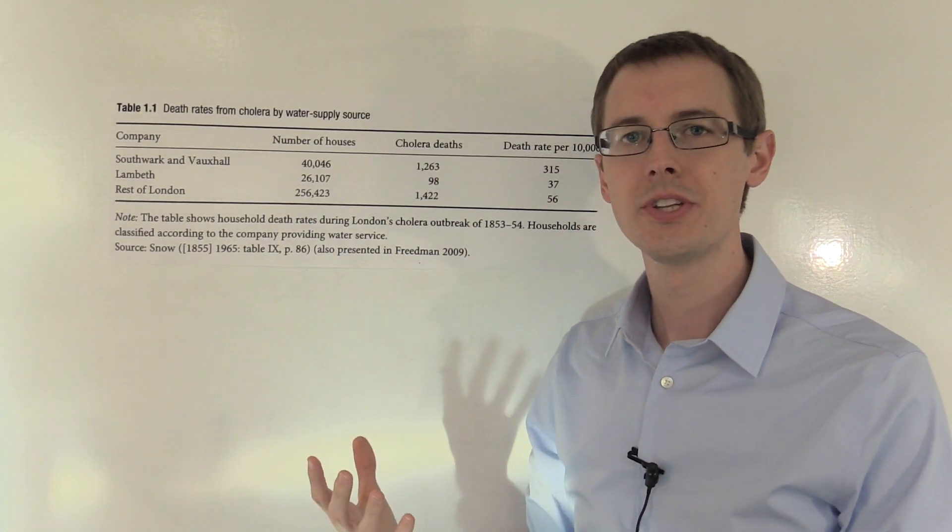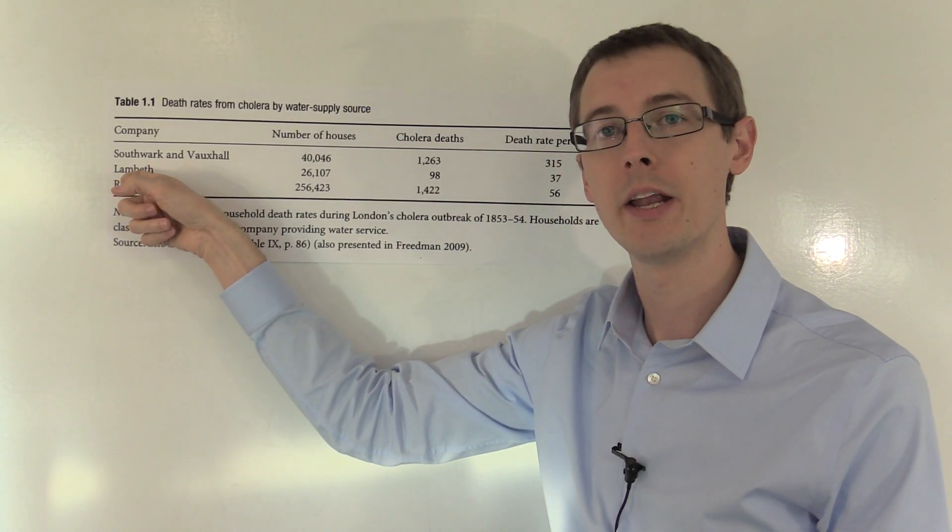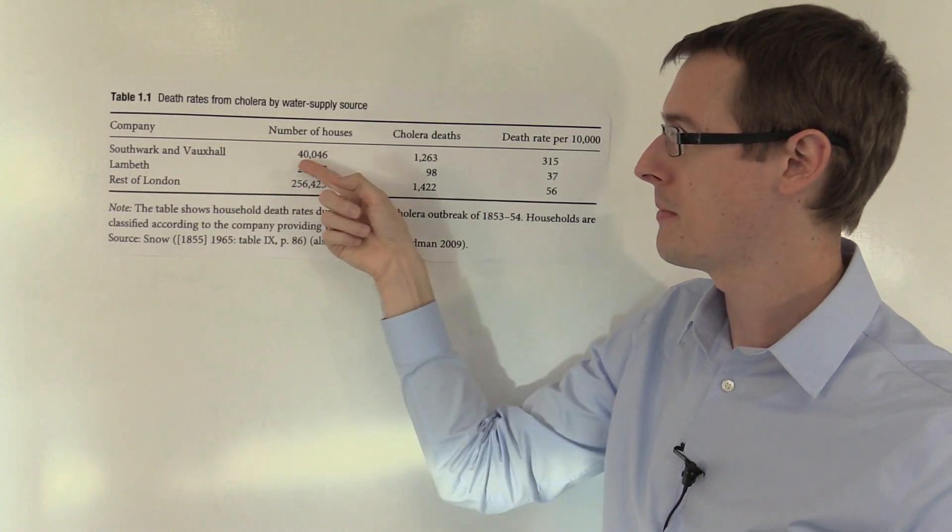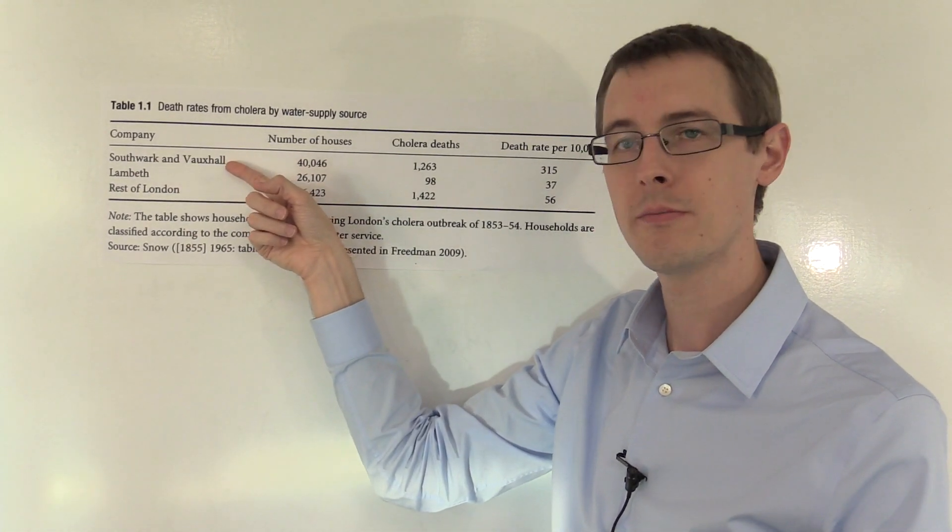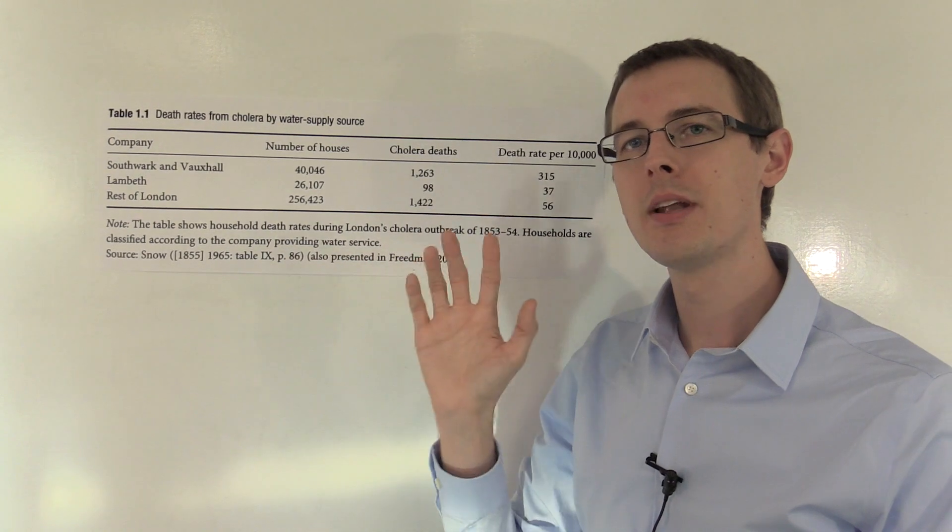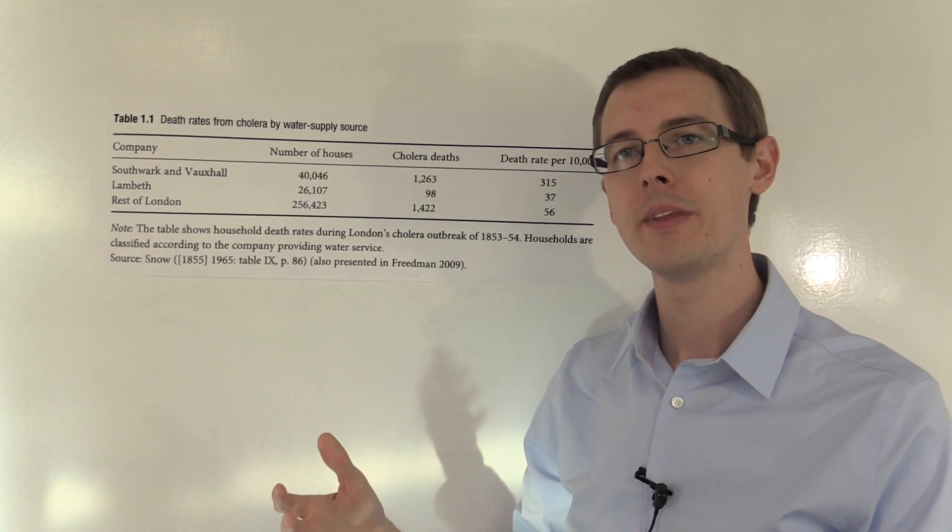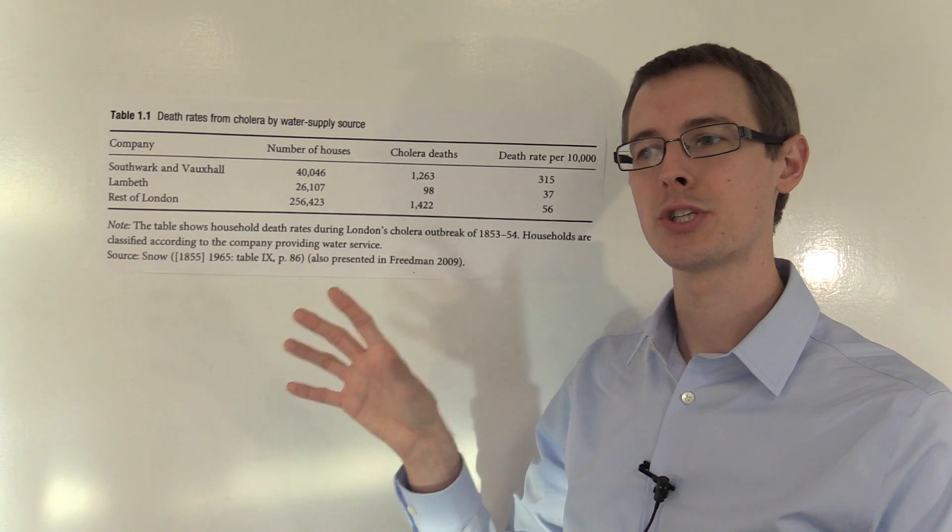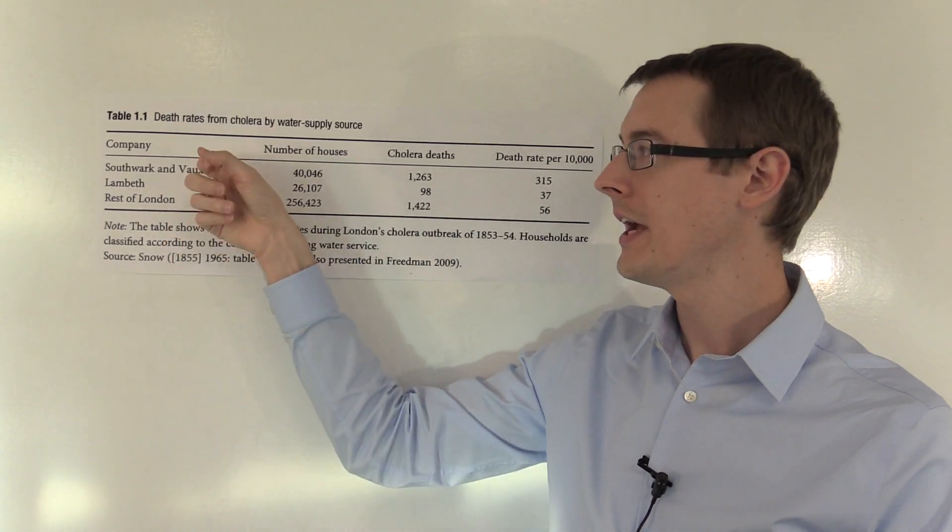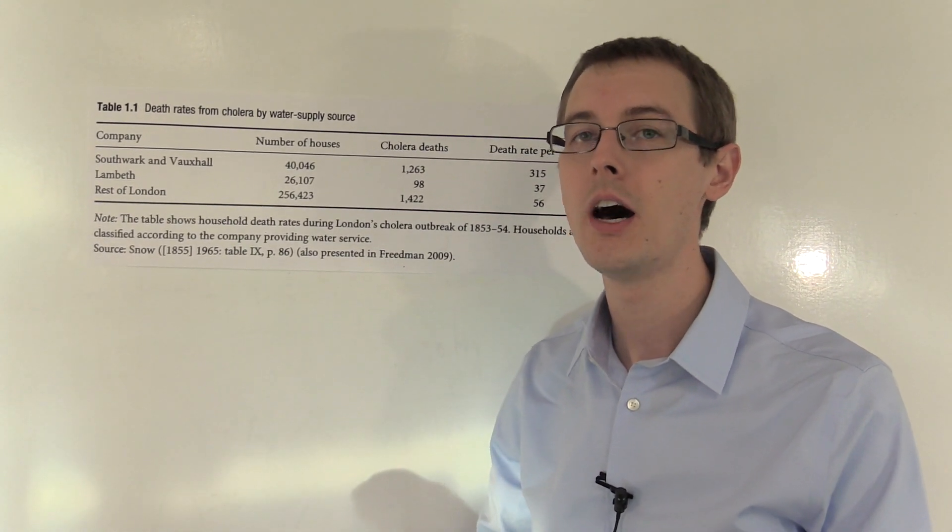The households in the city were split into two groups. Those who got clean water because their water was provided by Lambeth, and those who got dirty water because their water was provided by Southwark and Vauxhall. There are about 40,000 houses in the Southwark and Vauxhall group, and about 26,000 in the Lambeth clean water group.